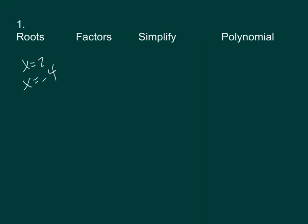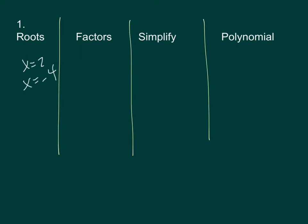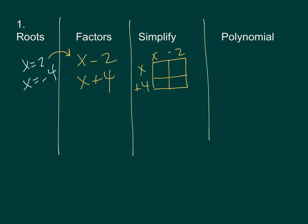Number one — we've actually already done something very similar to this. So if you have a root of x equals 2 and a root of x equals negative 4, you know that if it has two roots it's going to be a quadratic equation. The factors correspond to the roots: x minus 2 and x plus 4. Multiply those together and you get f of x equals x squared plus 2x minus 8.